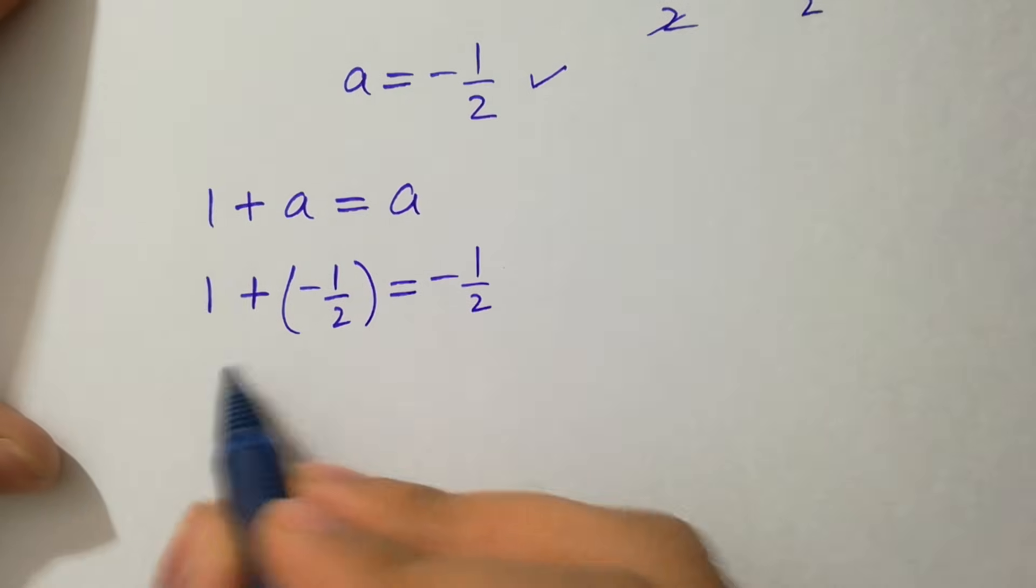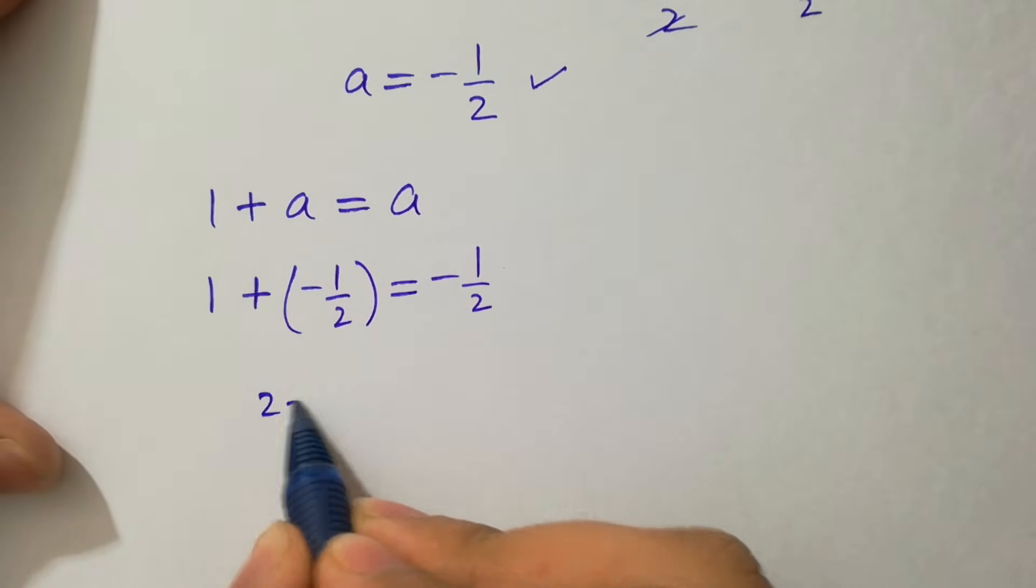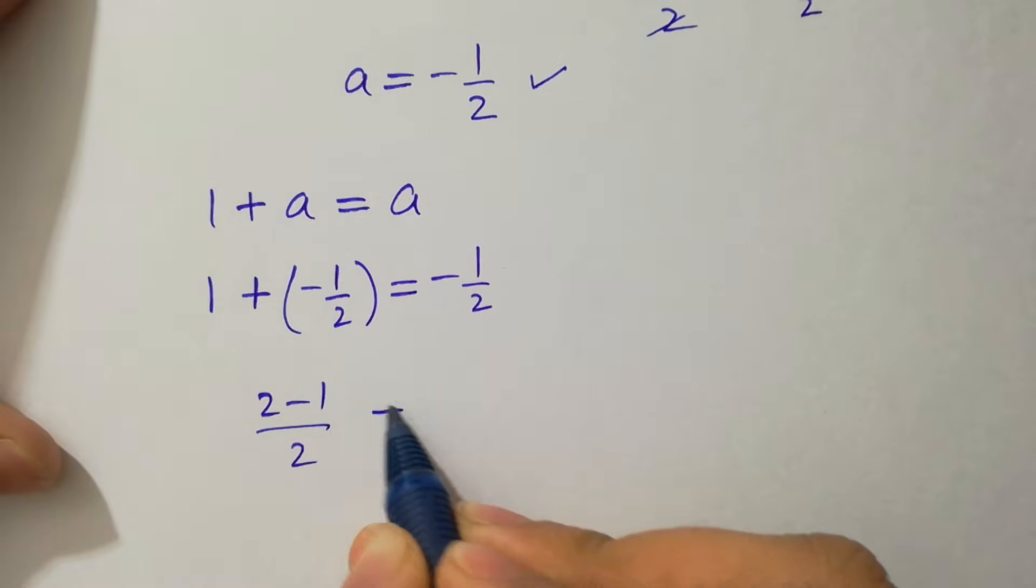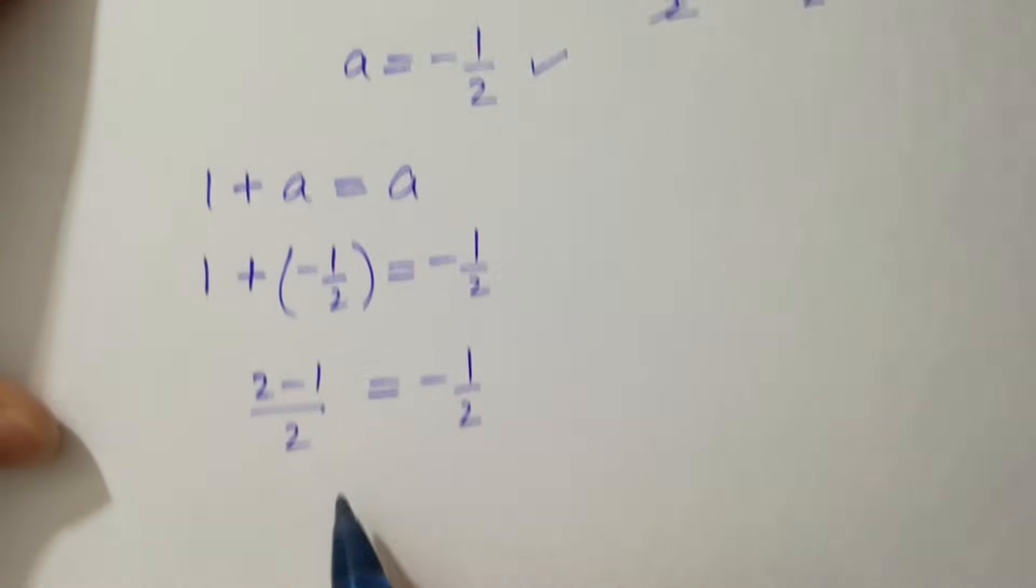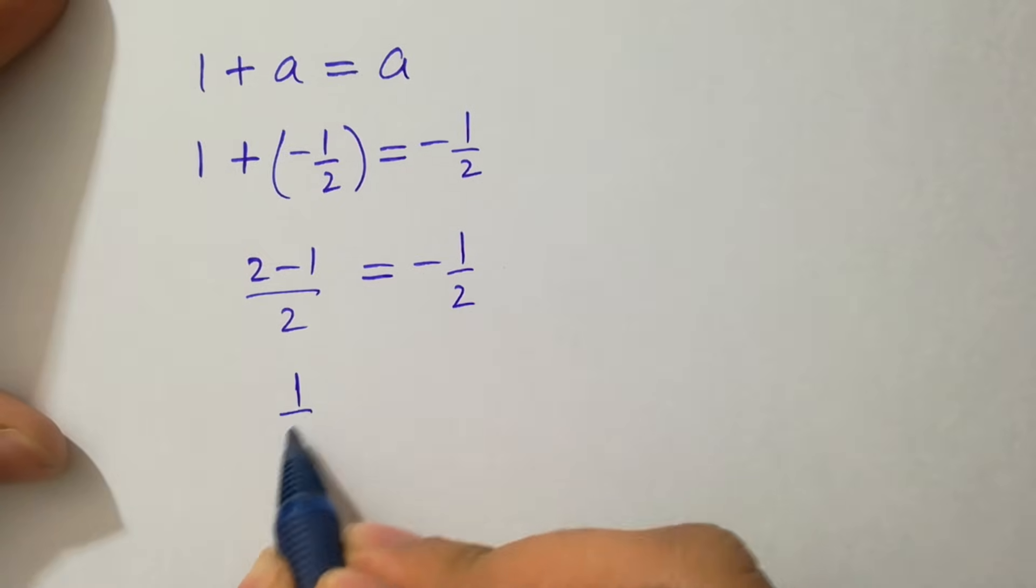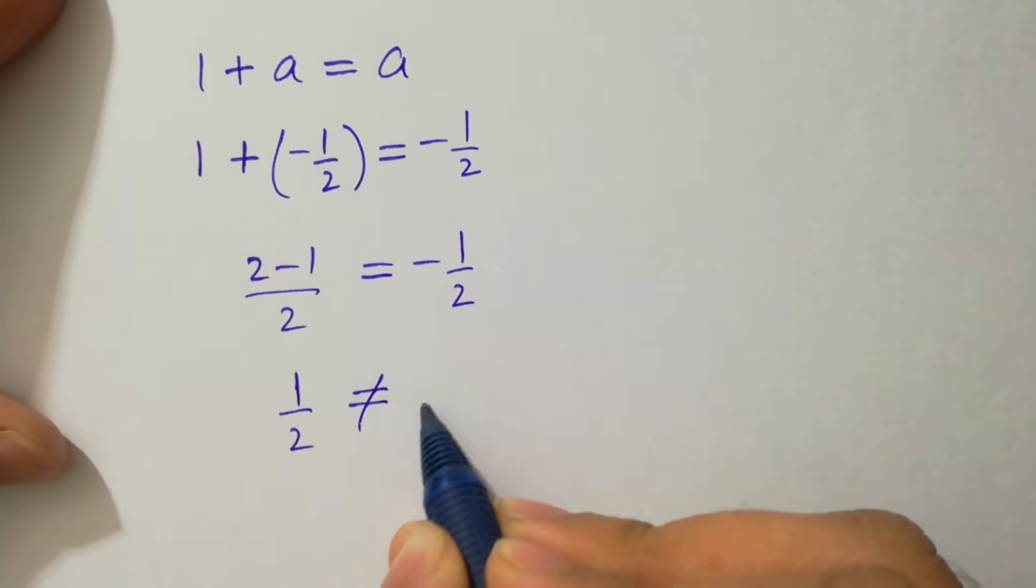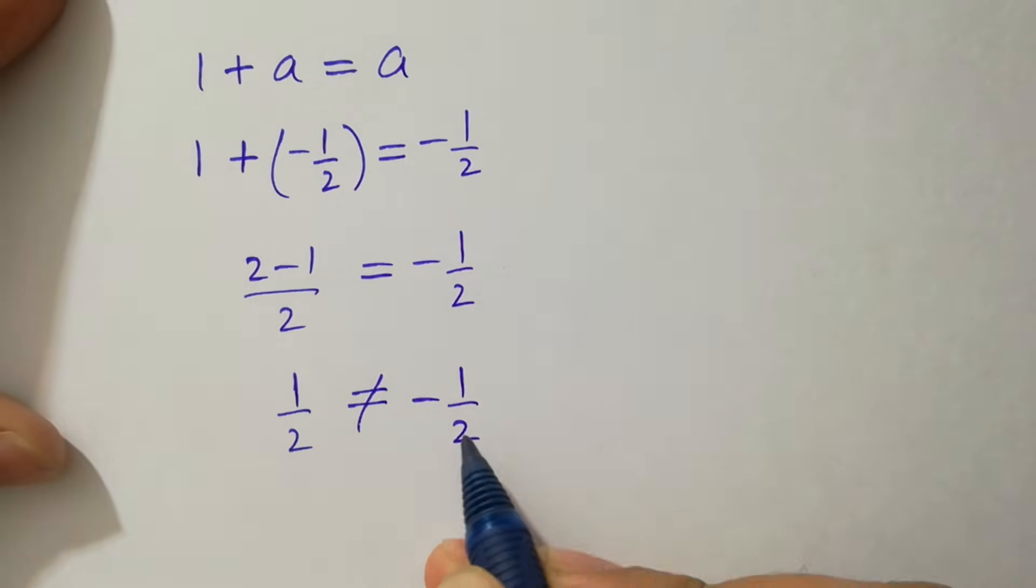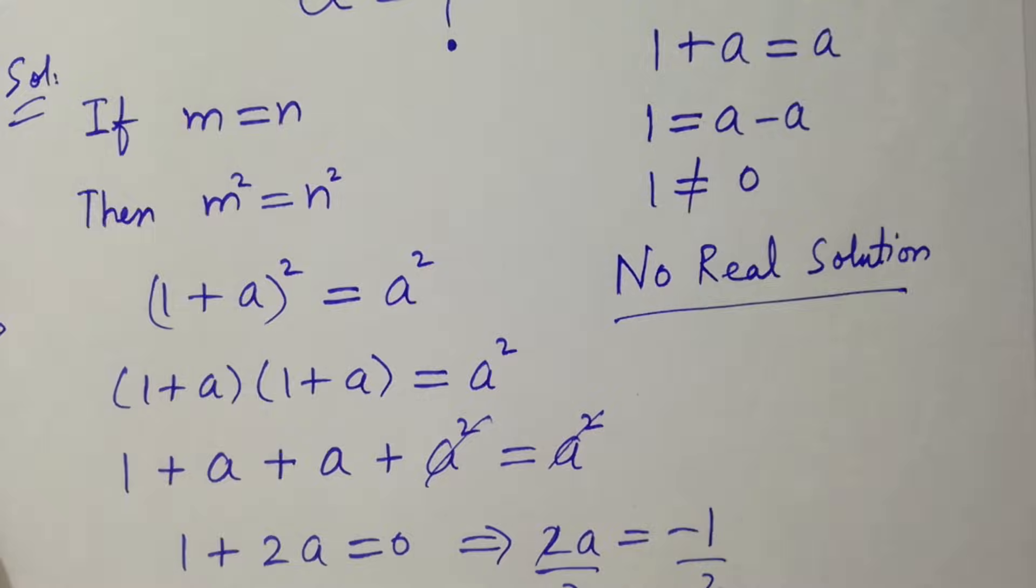If you solve this, we have 2 times 1 is 2. (2 - 1)/2 equals -1/2. 2 - 1 is 1/2, which does not equal -1/2. We show that this has no real solution.